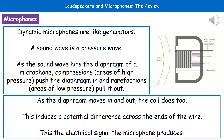Because the coil is attached to the diaphragm, as the diaphragm moves in and out the coil moves as well. Since the coil is then moving over the magnet, it is cutting those magnetic field lines, which means we induce a potential difference in the wire itself. That potential difference drives a current, which is the electrical signal that the microphone produces.